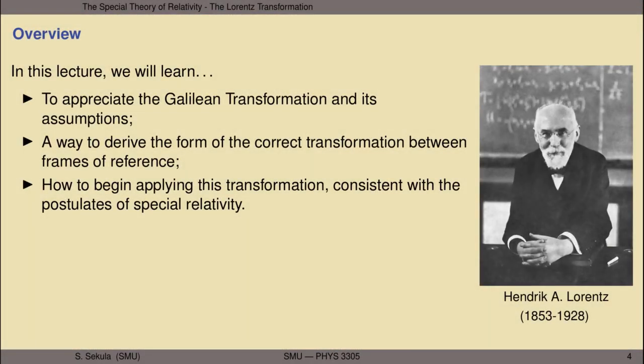In this lecture, we will learn to appreciate the Galilean transformation and its built-in assumptions. A decent understanding of the past will help us set the stage for the present. We'll learn a way to derive the form of the correct transformation between frames of reference, respecting the postulates of special relativity, and we'll learn how to begin applying this transformation and see that it is in fact consistent with the postulates of special relativity—entirely self-consistent—giving us a basis for making predictions about the natural world that can be tested.